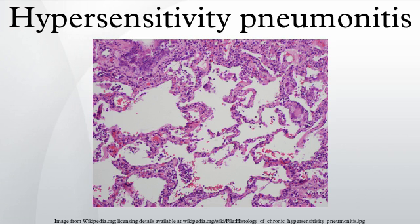Hypersensitivity pneumonitis is categorized as acute, subacute, and chronic based on the duration of the illness. In the acute form of HP, symptoms may develop four to six hours following heavy exposure to the provoking antigen. Symptoms include fever, chills, malaise, cough, chest tightness, dyspnea, rash, swelling, and headache. Symptoms resolve within 12 hours to several days upon cessation of exposure.